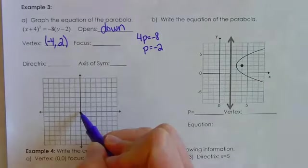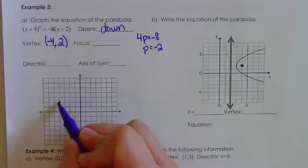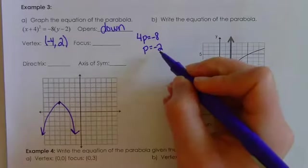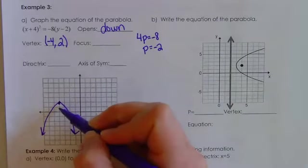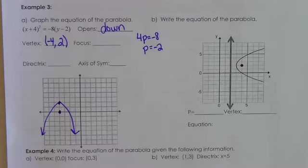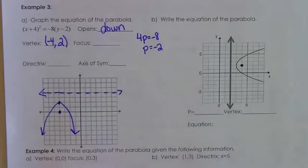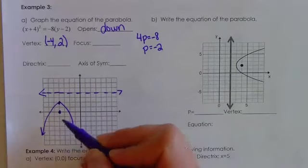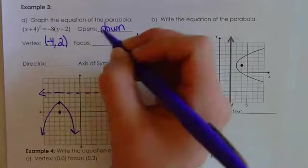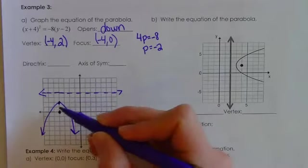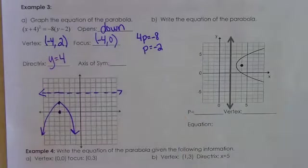Sketching the vertex at (−4, 2), the parabola opens down. Since P is negative 2, I go down 2 from the vertex to place the focus. You always go straight up, down, left, or right from your vertex. The directrix is in the opposite direction — go up 2 and draw that horizontal line. The directrix never touches or crosses your parabola. So the focus is the ordered pair (−4, 0), and the directrix is the horizontal line y = 4.